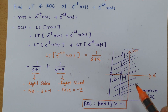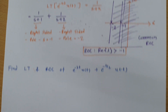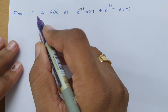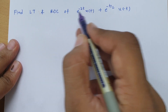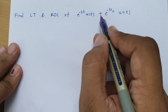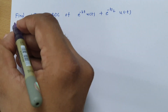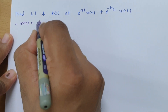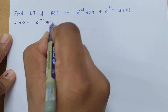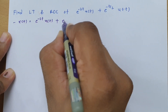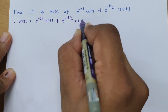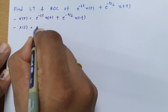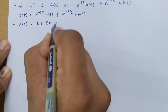Now for the second problem: find the Laplace transform and ROC for x(t) = e^(-2t)u(t) + e^(-t/2)u(-t).